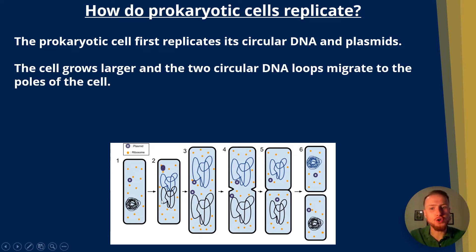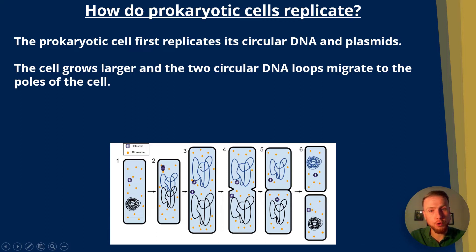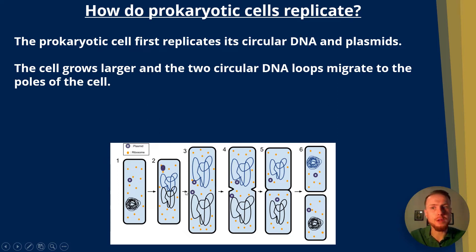Next, the cell grows larger, as we can see in steps two and three here, and the two circular DNA loops migrate to the opposite poles of the cell. We can see this circular DNA represented with the blue line here migrating upwards to that pole, and the circular DNA at the bottom represented by the black loop migrating to the bottom. These two small purple disks are the plasmids. The poles of a cell are basically the ends of the cell.